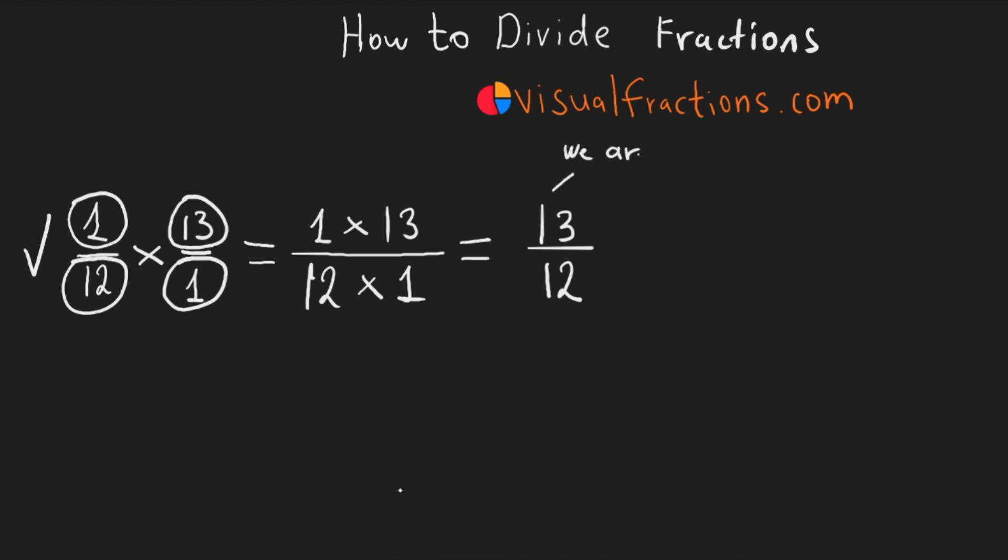But we're not finished yet. This fraction can be simplified. It's an improper fraction since the numerator is greater than the denominator. 13/12ths is equivalent to 1 and 1/12th, meaning 1 whole and 1/12th.